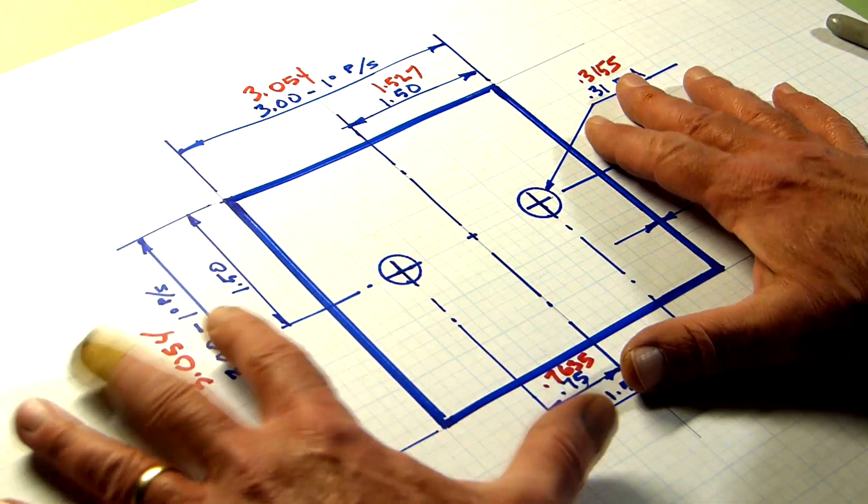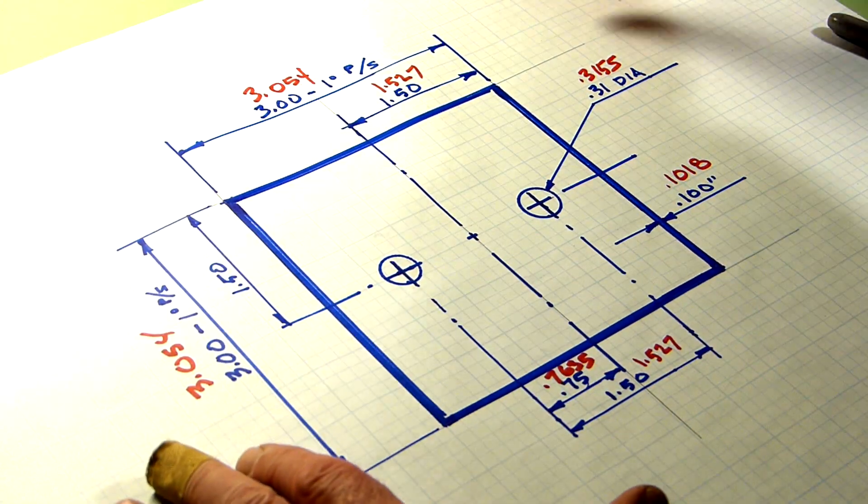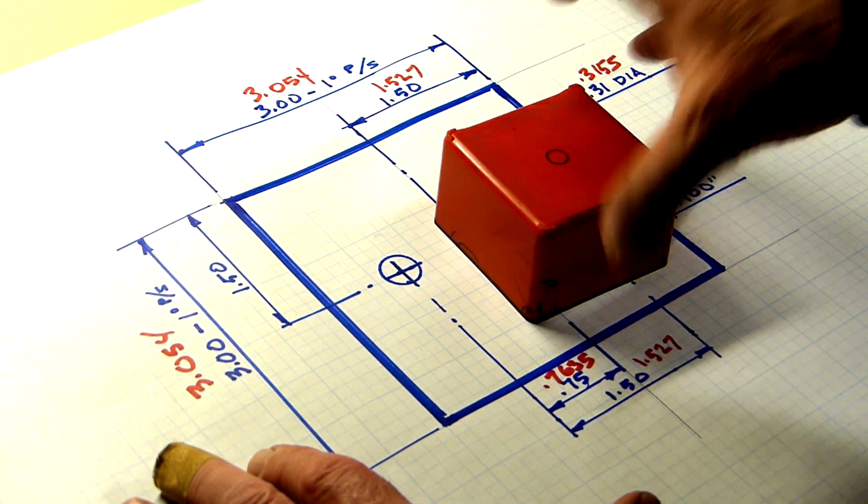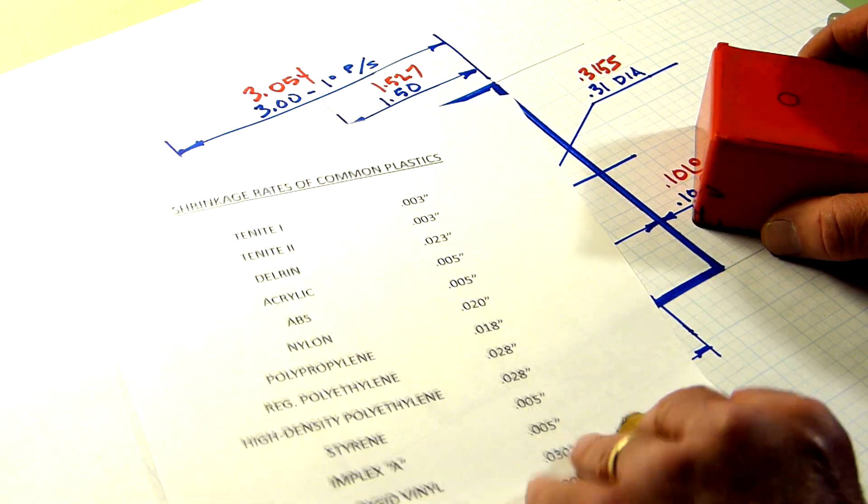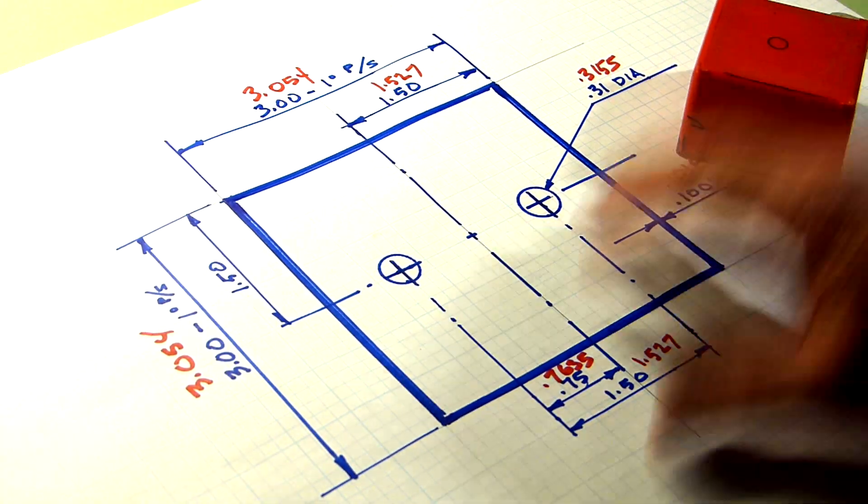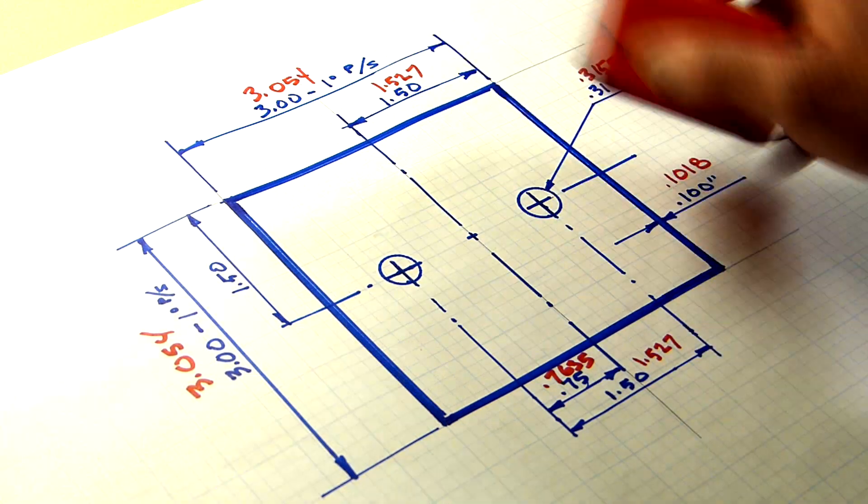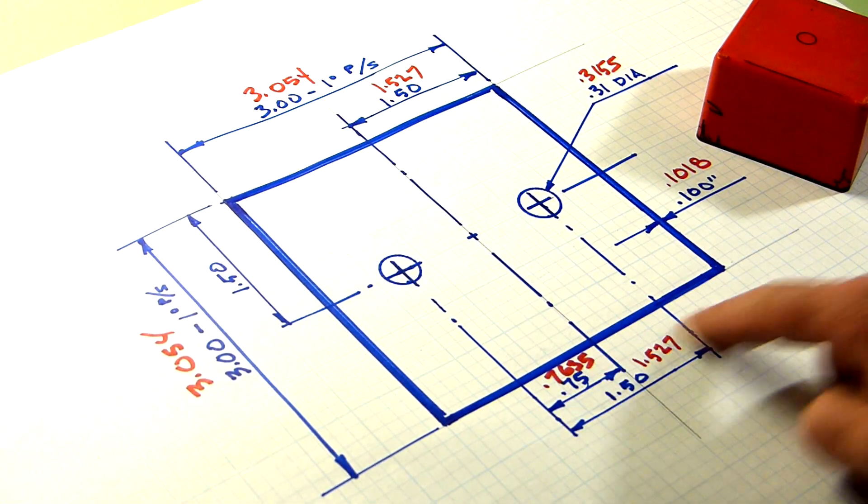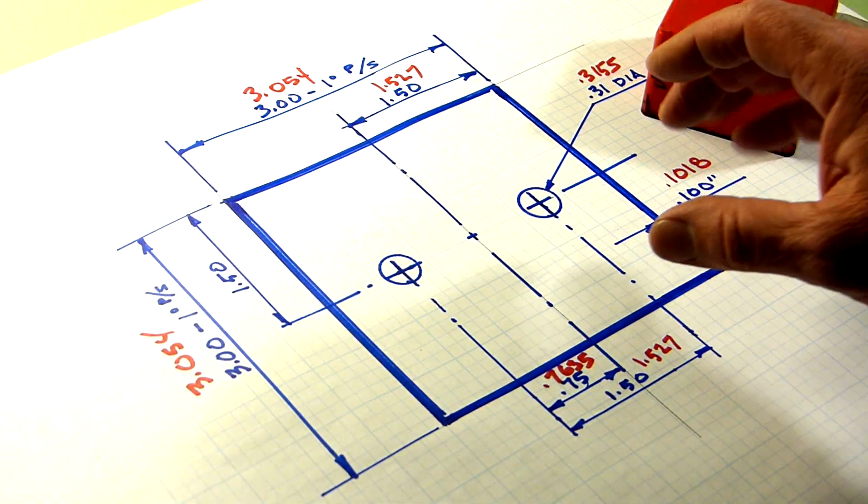So again, just to finish off here, the part is going to shrink. You need to know the material. And you need to multiply every dimension on the part drawing in blue by the shrinkage rate.